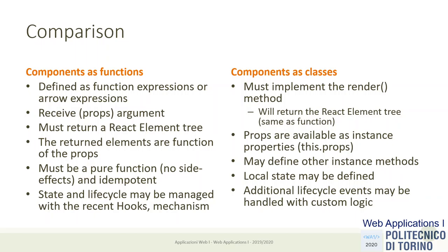When our component becomes more complex, in the case of functions we cannot define additional methods unless we use the hooks mechanism, which we will see in three weeks and which expands the scope of function components significantly. Except when using hooks, the only way to define local state in a component is to define it as a class. The function component should be pure — no side effects — and the same applies to the render method.